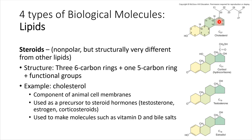A great example of a steroid is cholesterol. Cholesterol ends up being a precursor for a lot of other types of steroids — for example, testosterone and estrogen are both derived from cholesterol. Cholesterol is also a component in animal cell membranes, where it has a very important role in helping to mediate how fluid the membrane is. The more cholesterol packed into a cell membrane, the more rigid that membrane will be, so its levels have to be controlled somewhat carefully in the body.